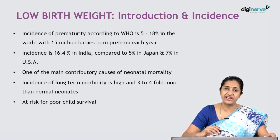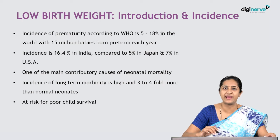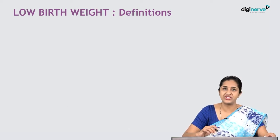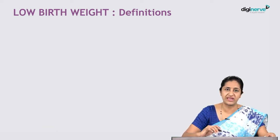This entire population is at risk for poor child survival and contributes to mortality and morbidity in the under-five age group. Now let's look at the specific terminologies and nomenclatures for low birth weight.